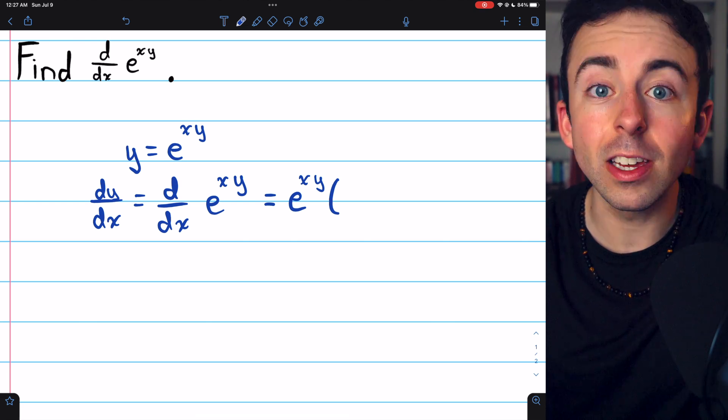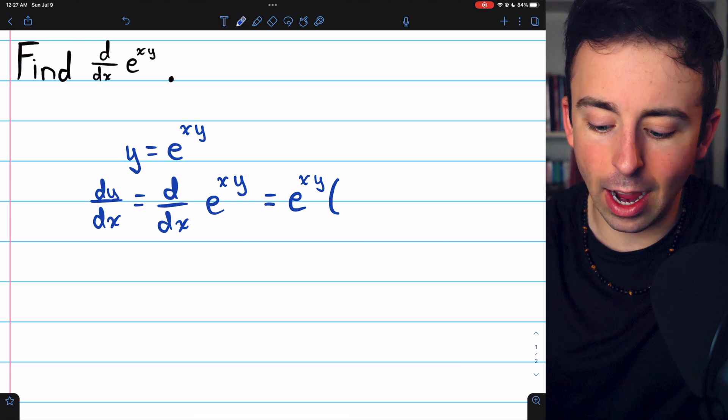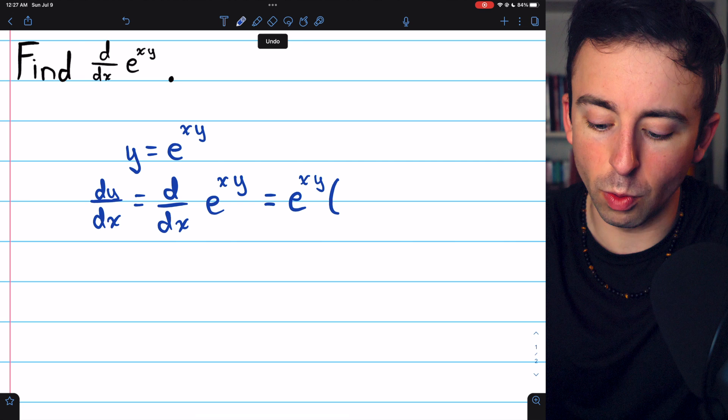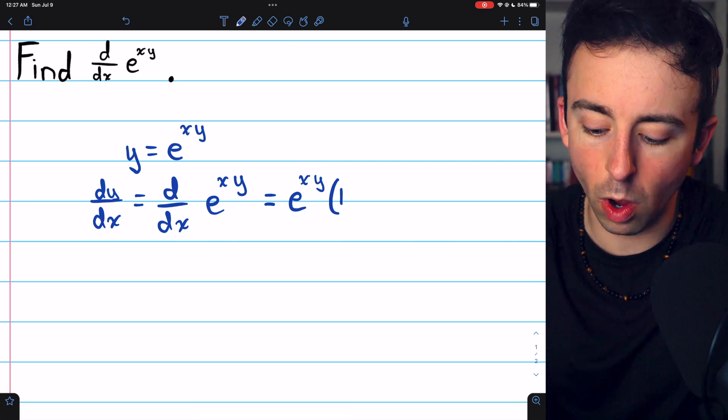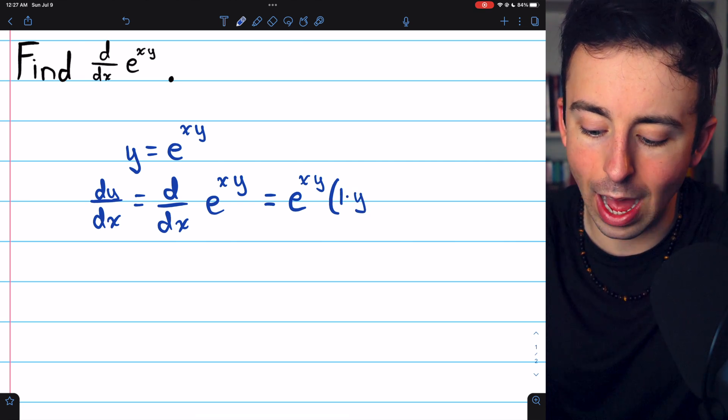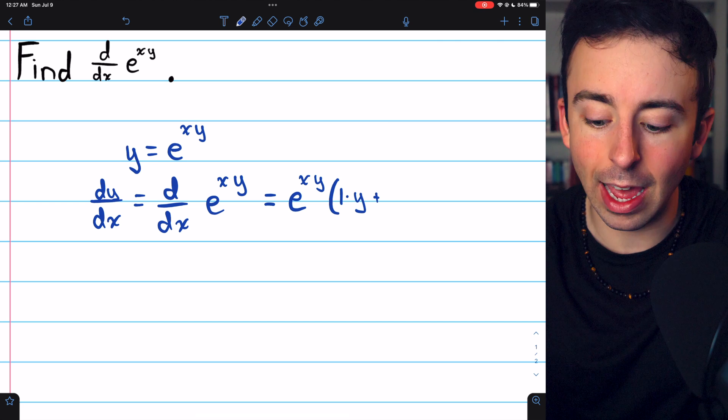The product rule is f prime g plus g prime f. Now, in this case, f prime is the derivative of x, which is 1, and g is just y. Then we add g prime f.